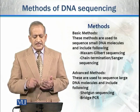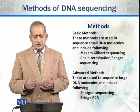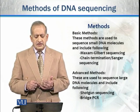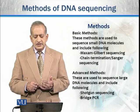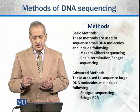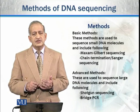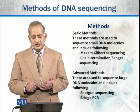Basic methods are generally two: they are called the Maxim-Gilbert Sequencing Method, and the other is Chain Termination, which is called the Sanger Method.